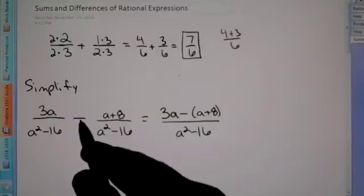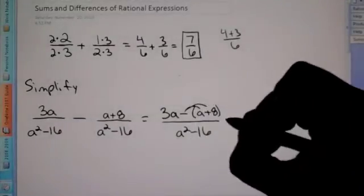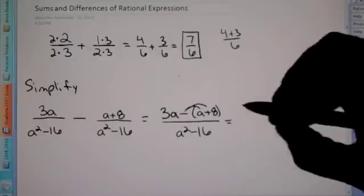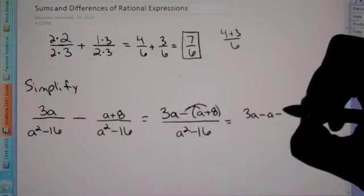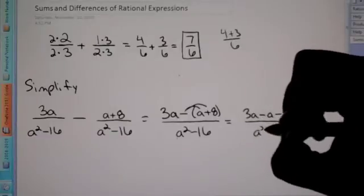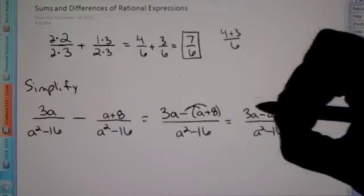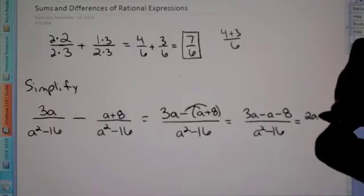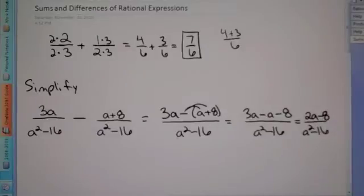If there's a minus here, put this side in parentheses because we're going to have to distribute that negative. So that ends up as 3a minus 1a minus 8 over a squared minus 16. When you combine like terms, 3a minus 1a is 2a, so we get 2a minus 8 over a squared minus 16. You've combined the numerators.